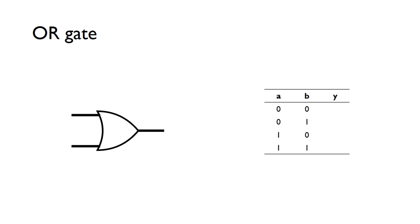Moving on to the OR gate — here is the symbol on the left, with inputs A and B and output Y. Looking at the truth table, as the name suggests, the output will be a one when A or B is a one. So zero or zero gives zero, but zero or one gives one, one or zero gives one, and one or one gives one. Any time one of the inputs is a one, the output will be a one.